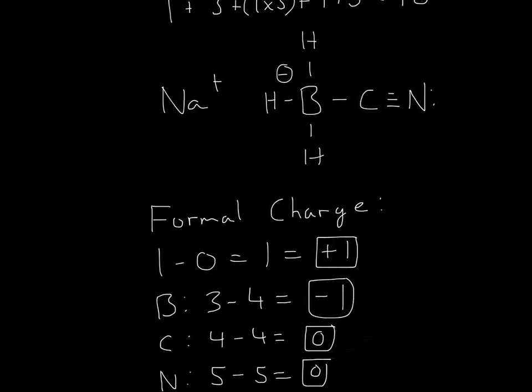Now for boron, we'll look at it, and it's actually in group 3 of the periodic table. So we'll write down 3, and now count up the bonds. So 1, 2, 3, 4. So it has 4, so 3 minus 4 will be negative 1. So that's why it has a negative charge.